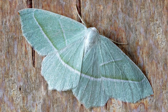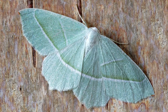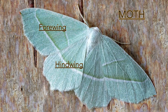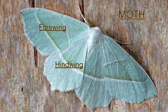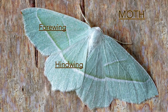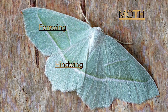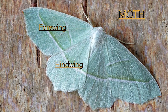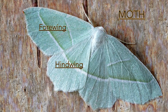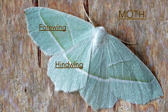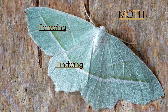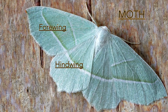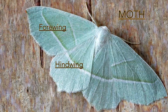Also, the moth wing, unlike butterfly wings, has a structure called a frenulum which joins their forewing — their front wing — to their hindwing — their back wing — so that the wings can work in unison, working together at the same time during flight.